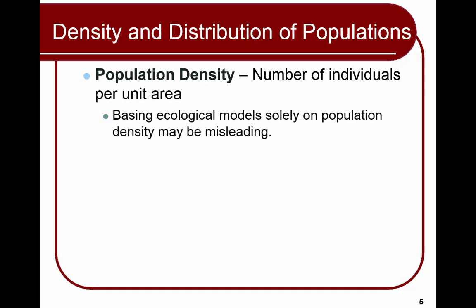When we look at population density, we're looking at the number of individuals per unit area. But this can be misleading because it gives the impression that they are evenly distributed. We know there are not 86.8 persons living per square mile everywhere in the United States — some areas have more and some have less — but population density gives the impression of even distribution.